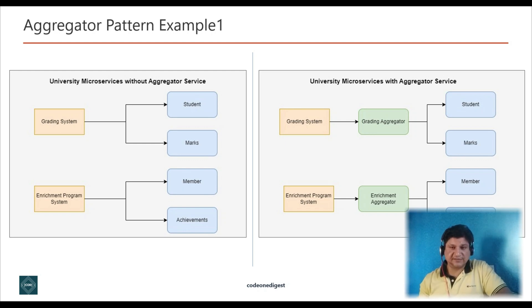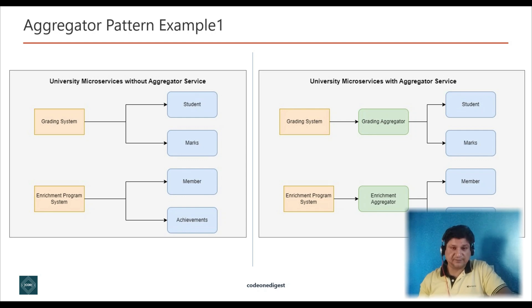You have two consumers: a grading system and an enrichment program system. Your team might create one microservice per system, but the grading system needs student information and marks information, while the enrichment program system needs membership and achievement information. The solution is the aggregator service pattern — the aggregator takes the request from the grading system and invokes the relevant services to aggregate their response.